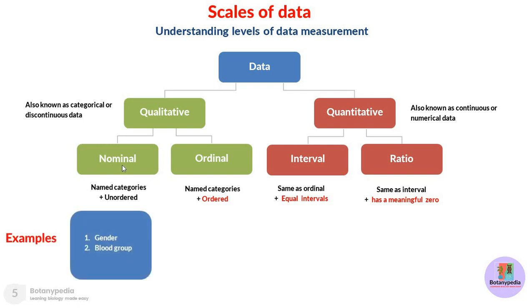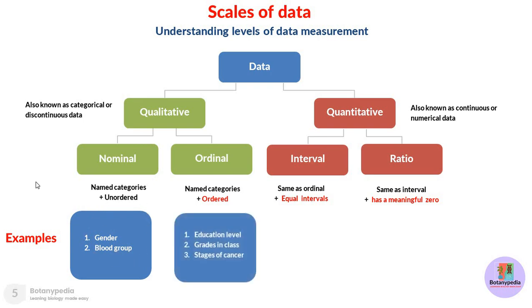Here are some examples. Gender is an example of nominal data — it can be male or female, with no order or hierarchy. Blood group is also nominal data: it can be group A, B, AB, or O — four named categories with no required order. For ordinal data, examples include education level, grades in a class where an A grade is better than a B grade, and severity of a disease such as stages of cancer with different ordered categories.